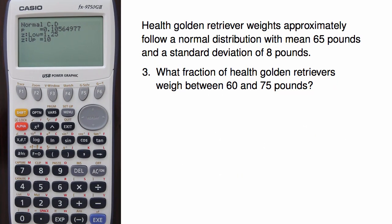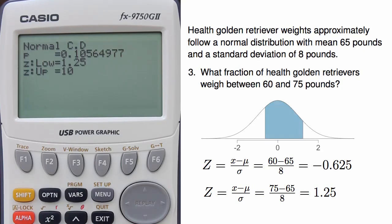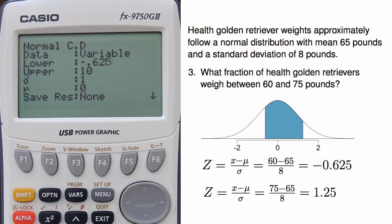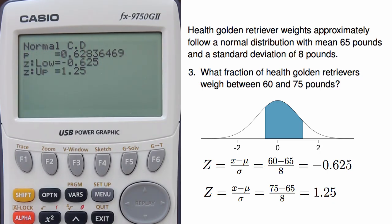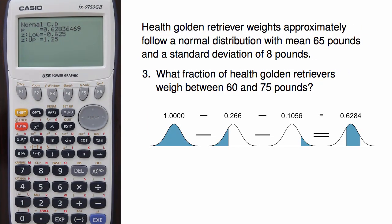On to the third problem. What fraction of healthy golden retrievers weigh between 60 pounds and 75 pounds? I've already computed the z-scores from earlier problems for both 60 and 75 pounds, so I can just reuse these values. The lower z-score is negative 0.625 and the upper z-score is 1.25. As before, I should draw a picture showing the area I'm interested in. I can punch these z-scores into the calculator — negative 0.625 as the lower bound and 1.25 as the upper bound — which gives a fraction of 0.6284. You might also notice that this middle area could have been computed by taking the total area under the normal curve and subtracting out the areas previously calculated.